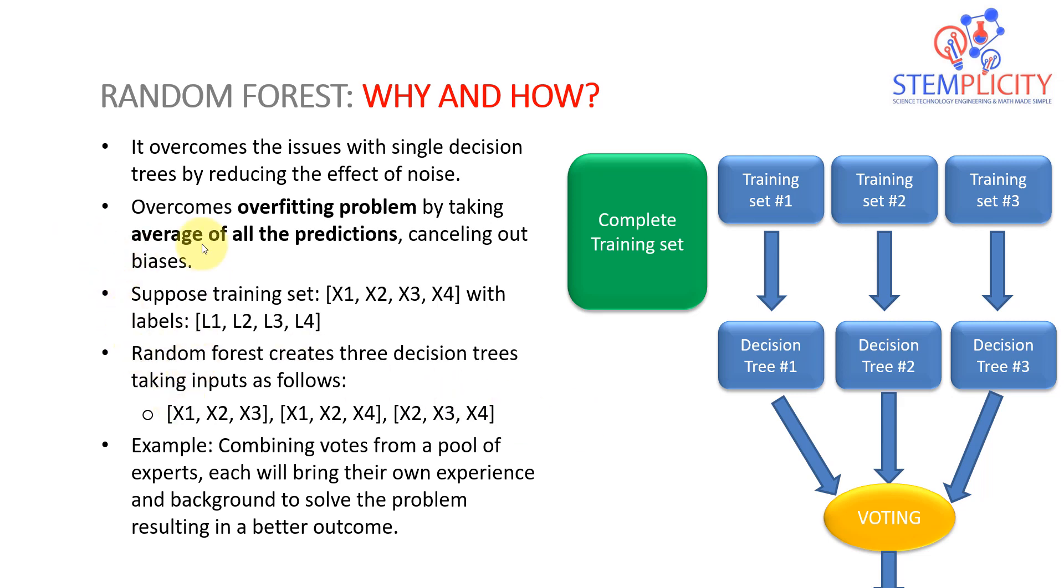So what's the advantage? Why are we doing this? The objective is that it overcomes the issues with single decision trees by reducing the noise. Or if you guys recall, we in general try to overcome what we call the overfitting problem, which is when the algorithm starts to focus on the details of the training data and forget to generalize, forgets the big picture. And that's why the beauty of random forest is that since we develop different sets of training, training set 1, 2, and 3, randomly, we try to avoid this overfitting problem. We try to get the average of all the prediction. So we cancel out any bias or we cancel out any overfitting. That's from a very high level. We're not going to dig into the mathematics, but that's the intuition behind it.